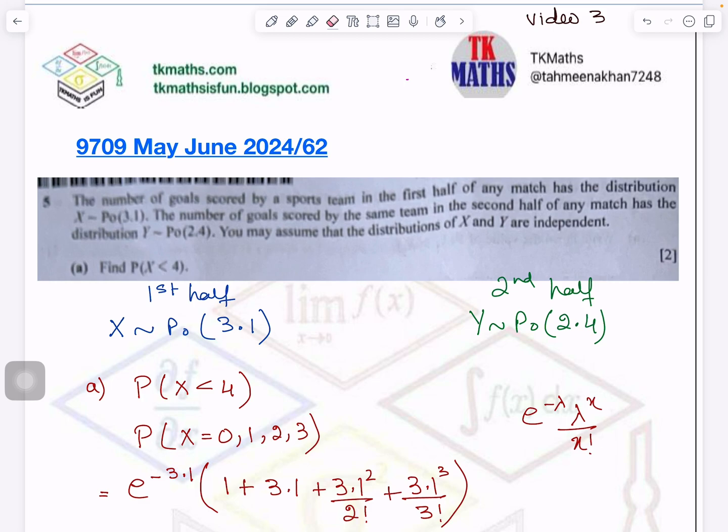Question number 5 is related to linear combination of Poisson distribution and question number 7 is probability density function. 6 is little longer, hypothesis related. I will make a separate video on it.